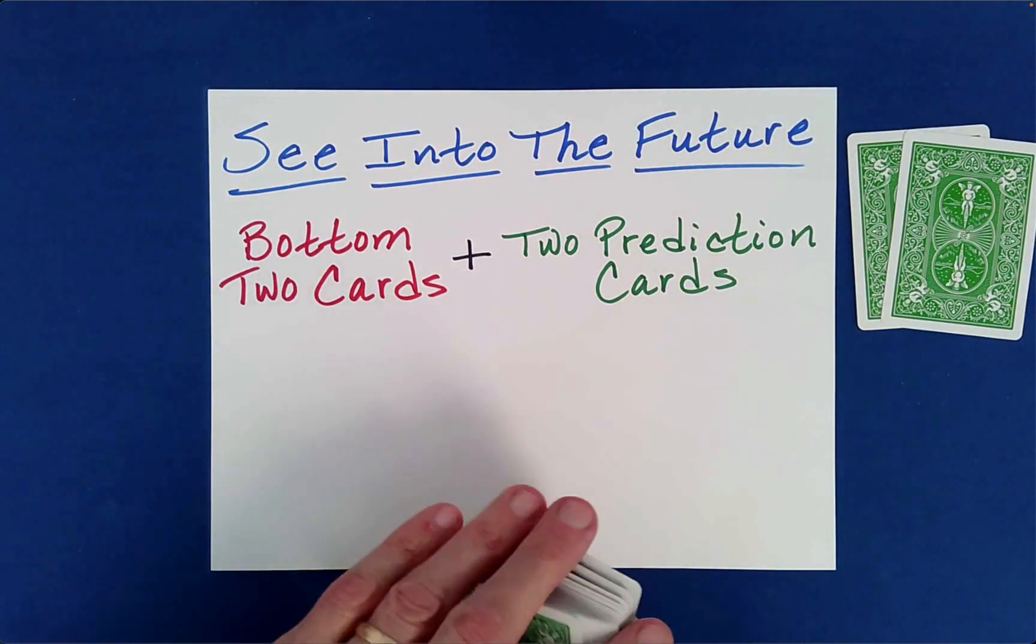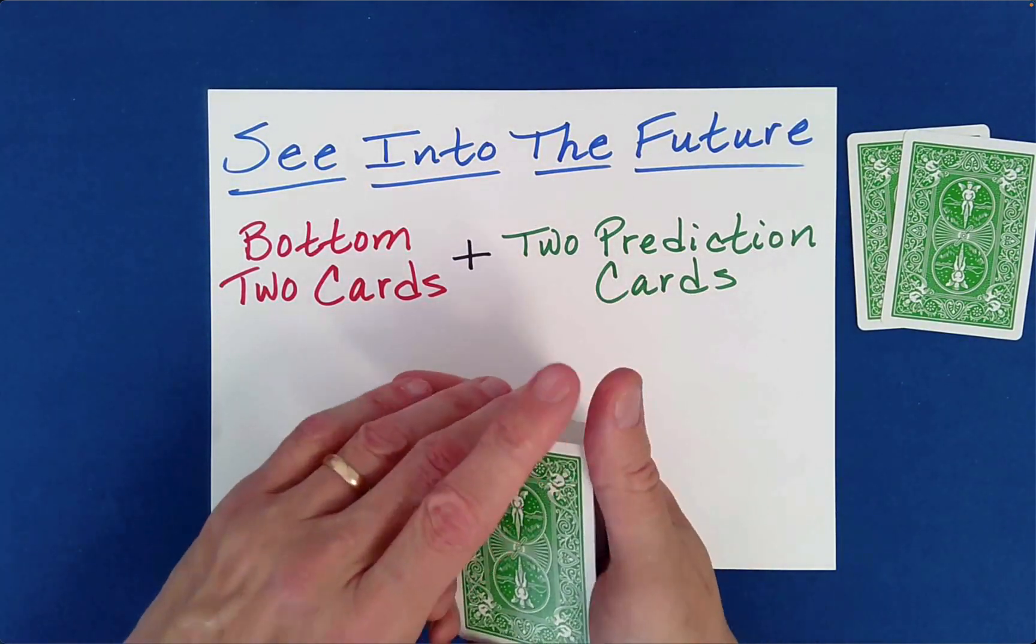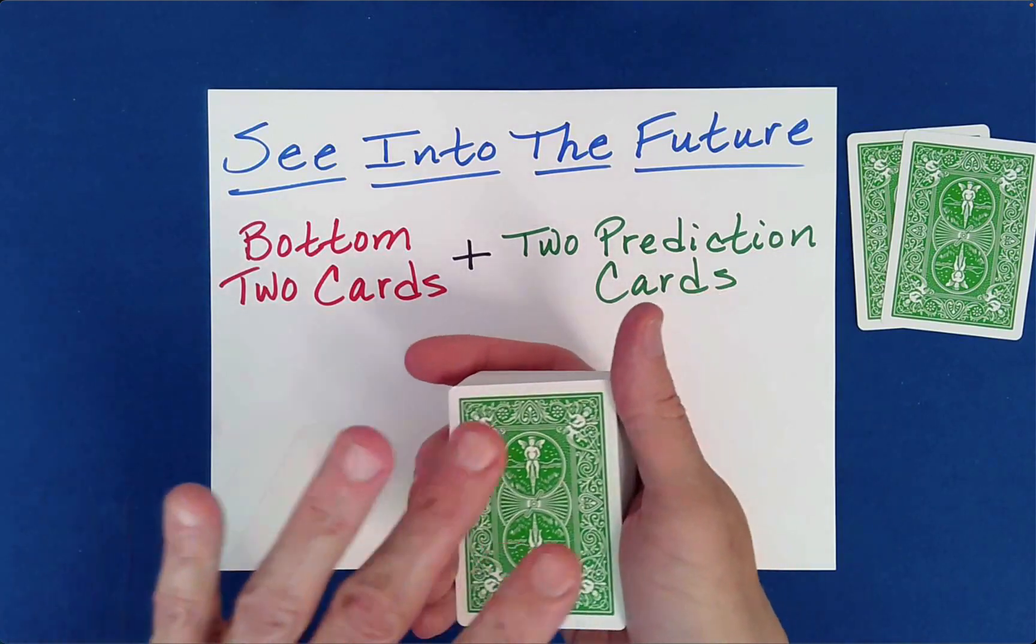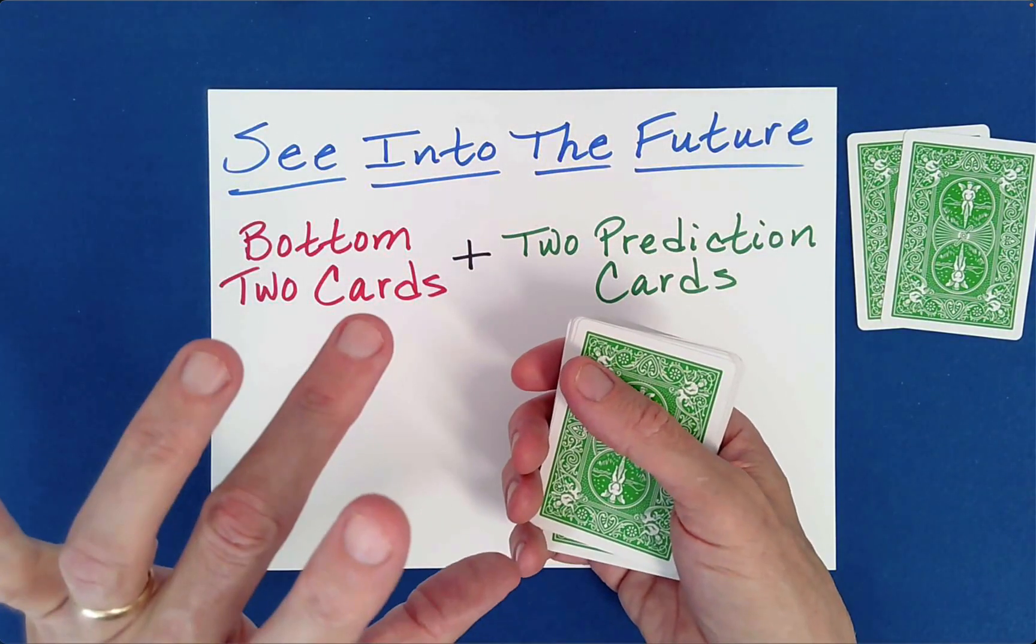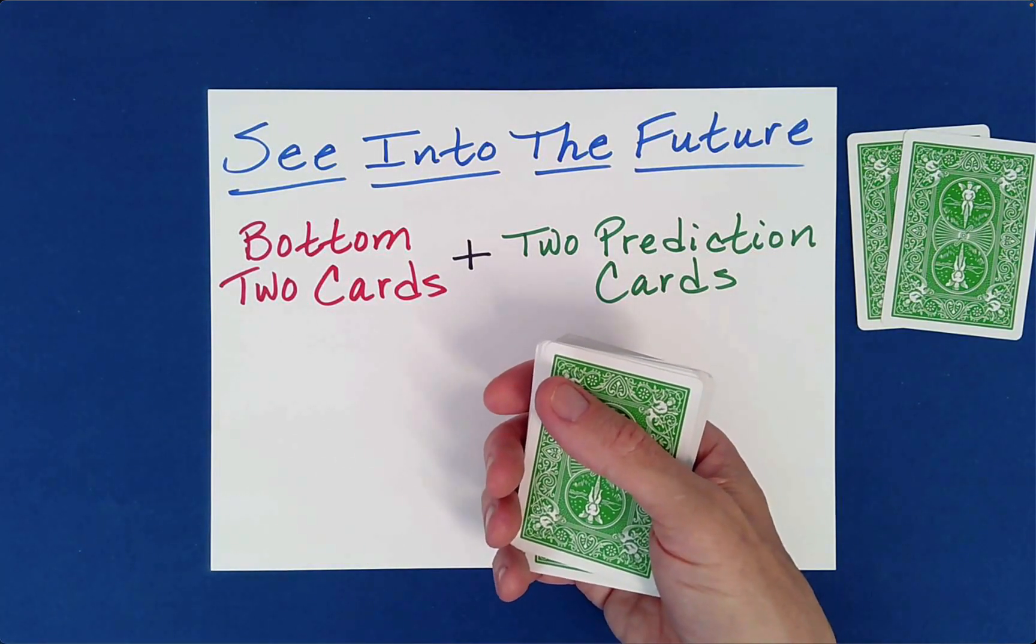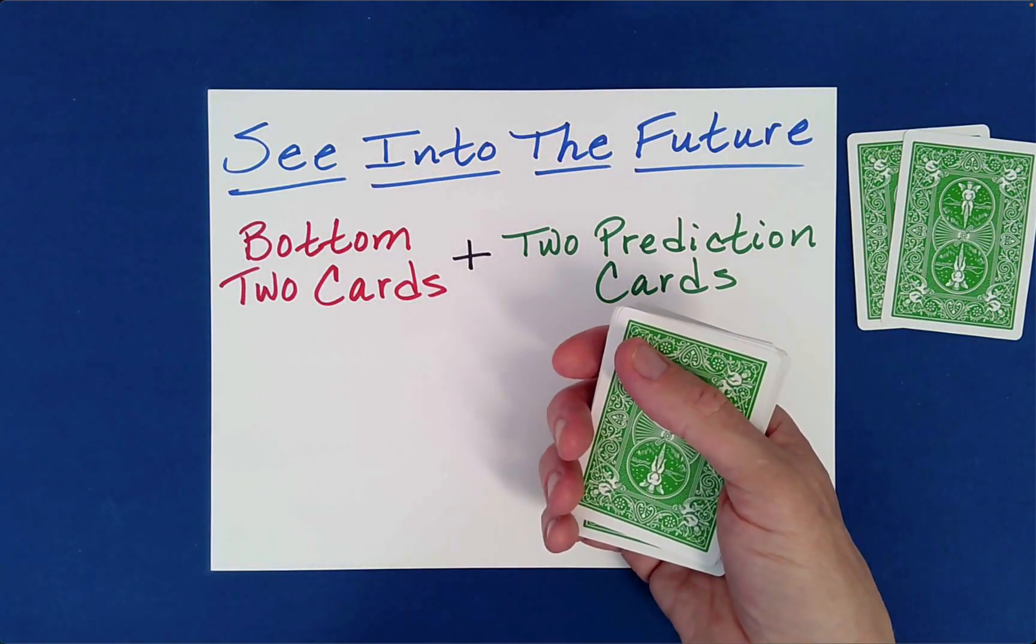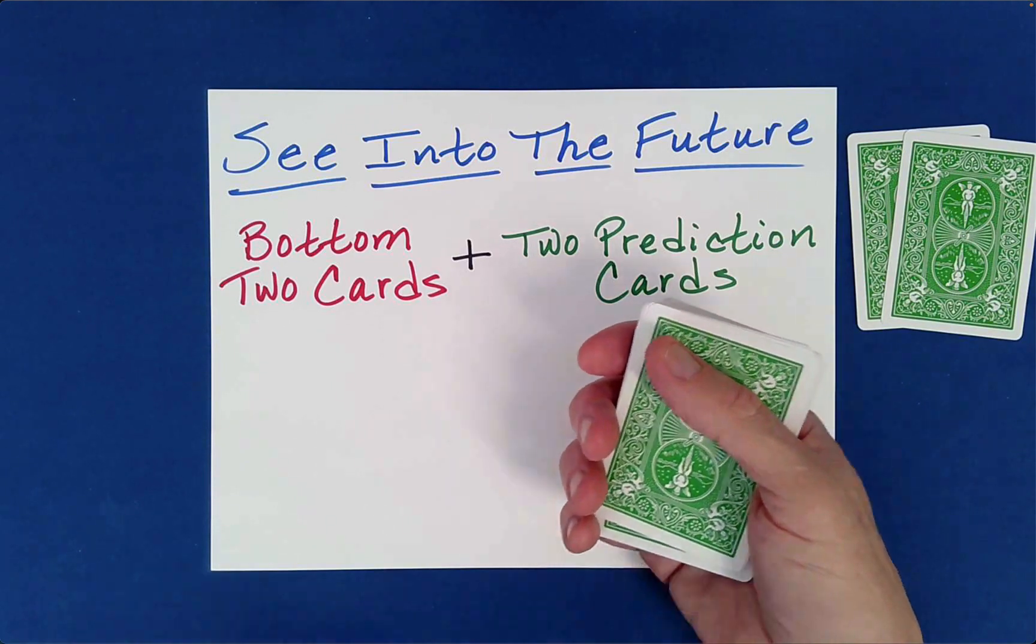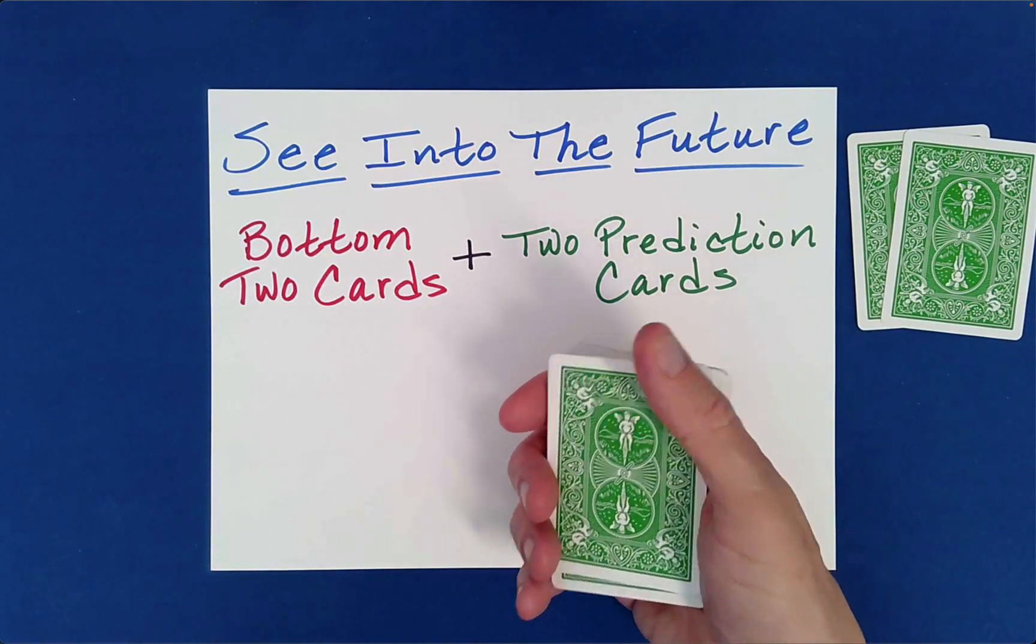Okay, and then just, you know, kind of make sure you don't flash that, meaning show the spectator accidentally what the bottom card is. And then you can set your two prediction cards off to the side where the spectator can keep an eye on them. Okay, now you can actually continue from this point and make a big deal about the fact that I didn't, okay, I'm not going to change the order of any of the cards.